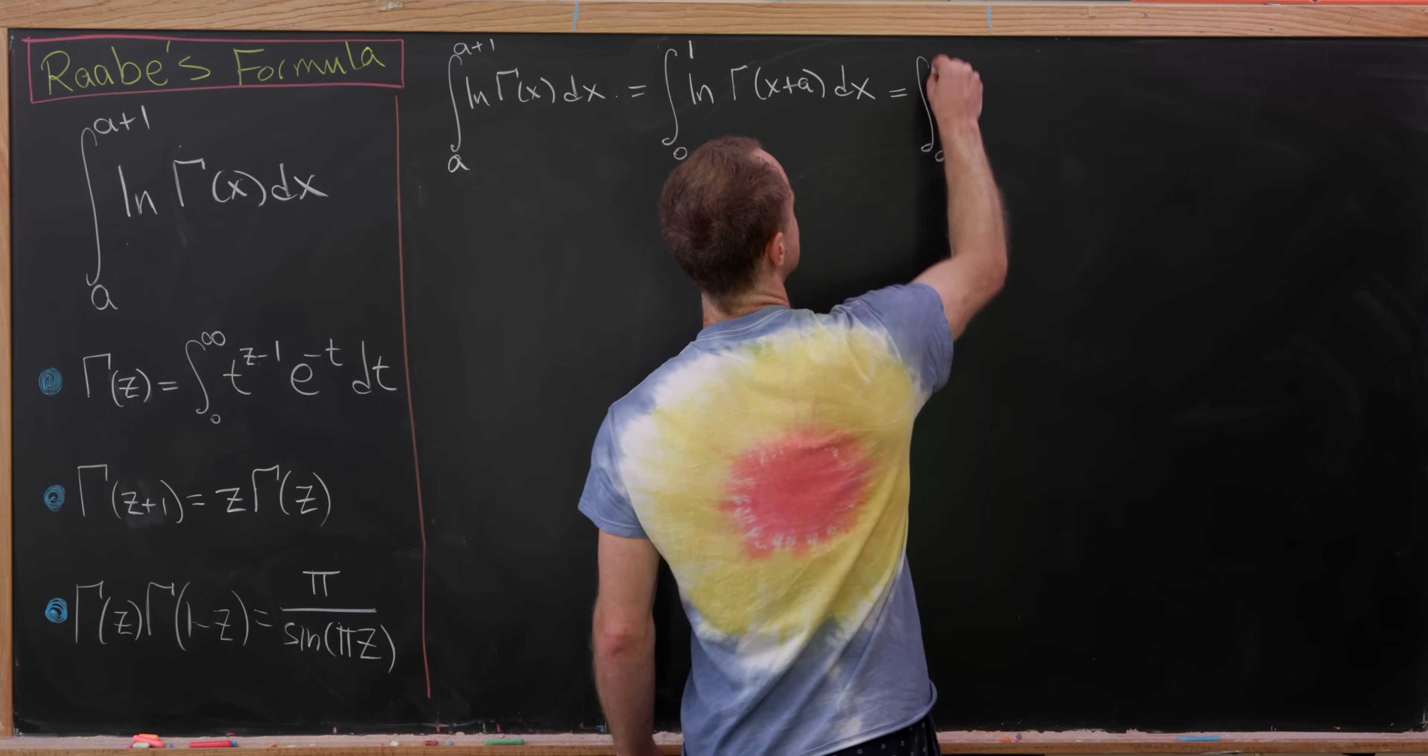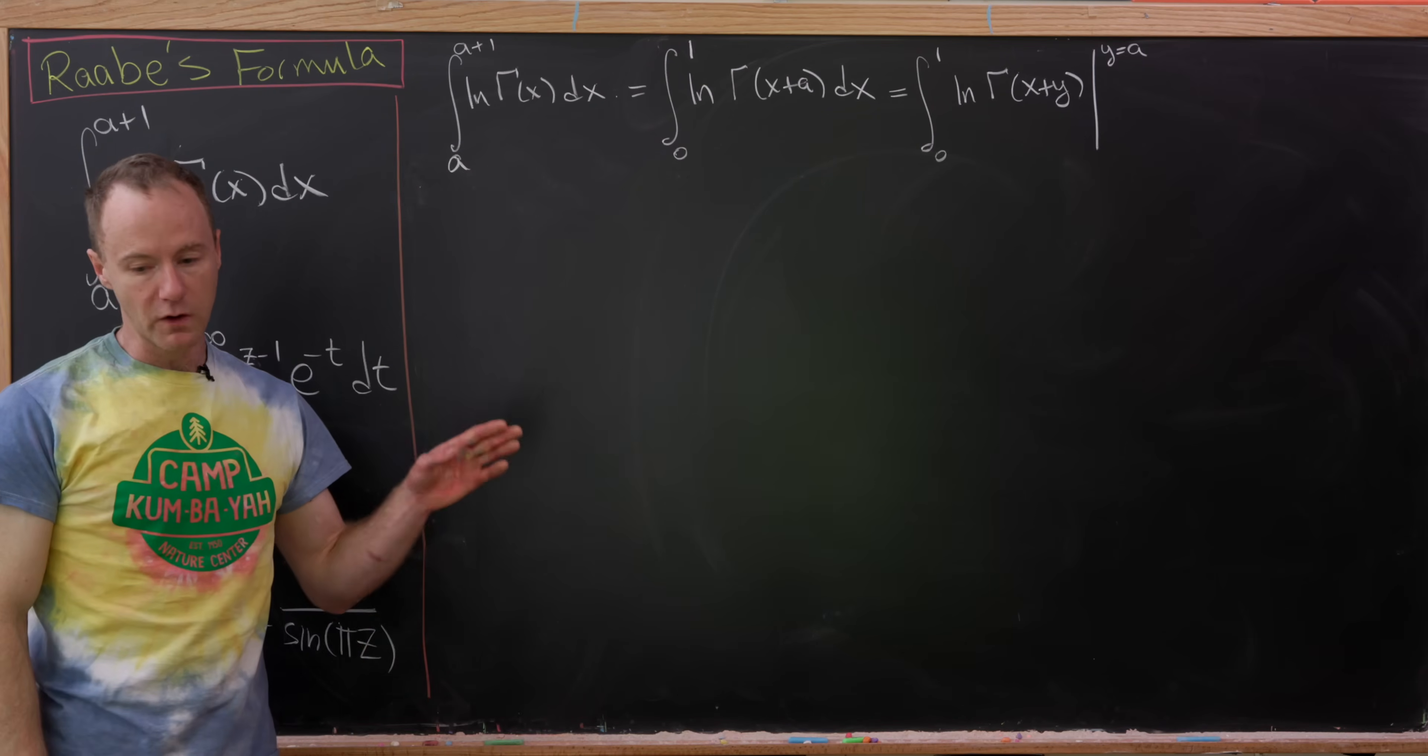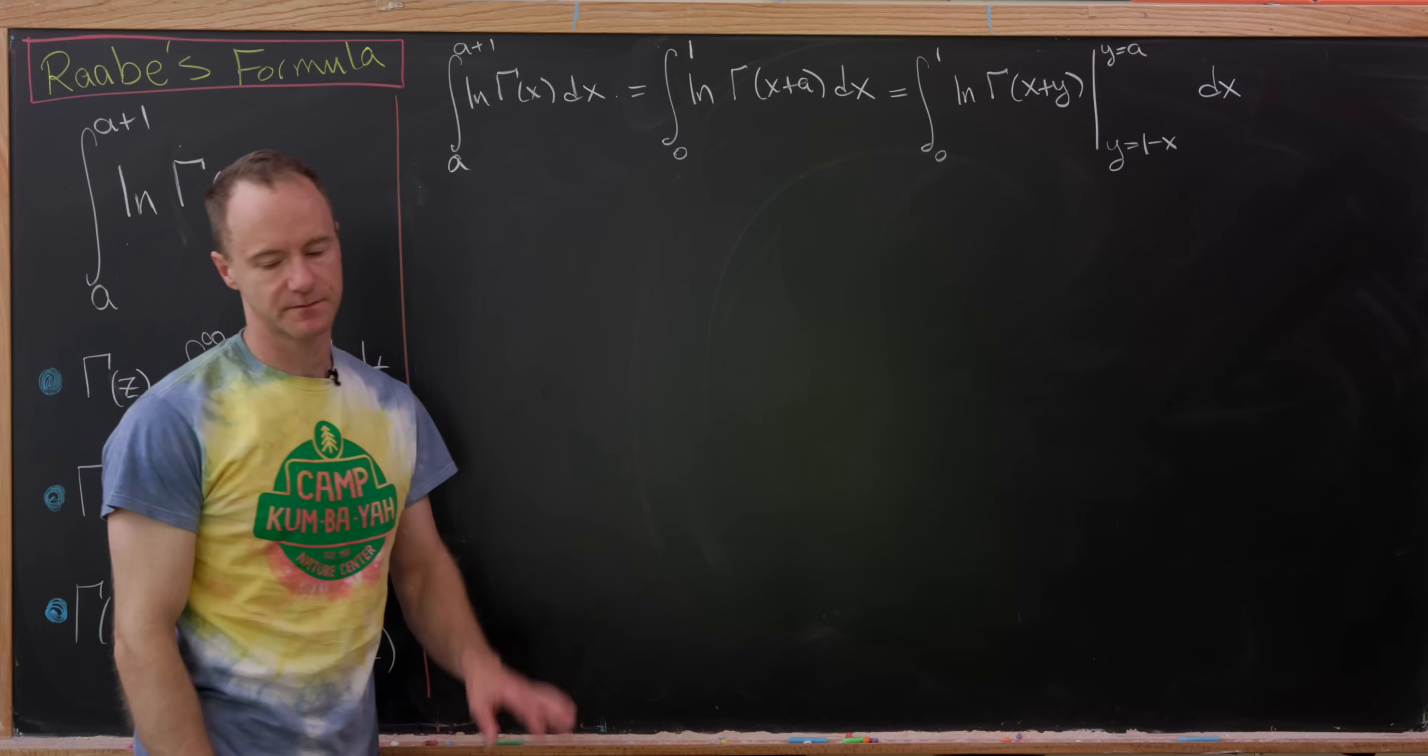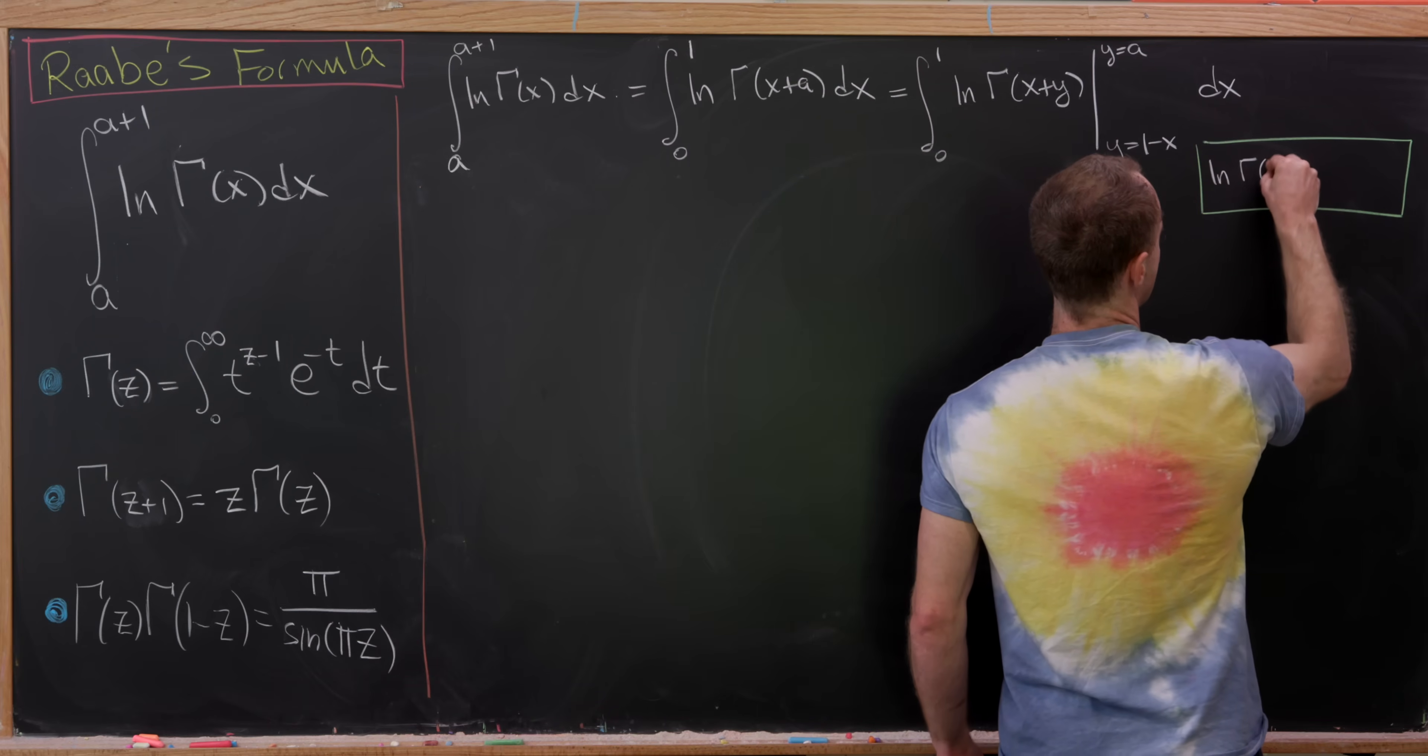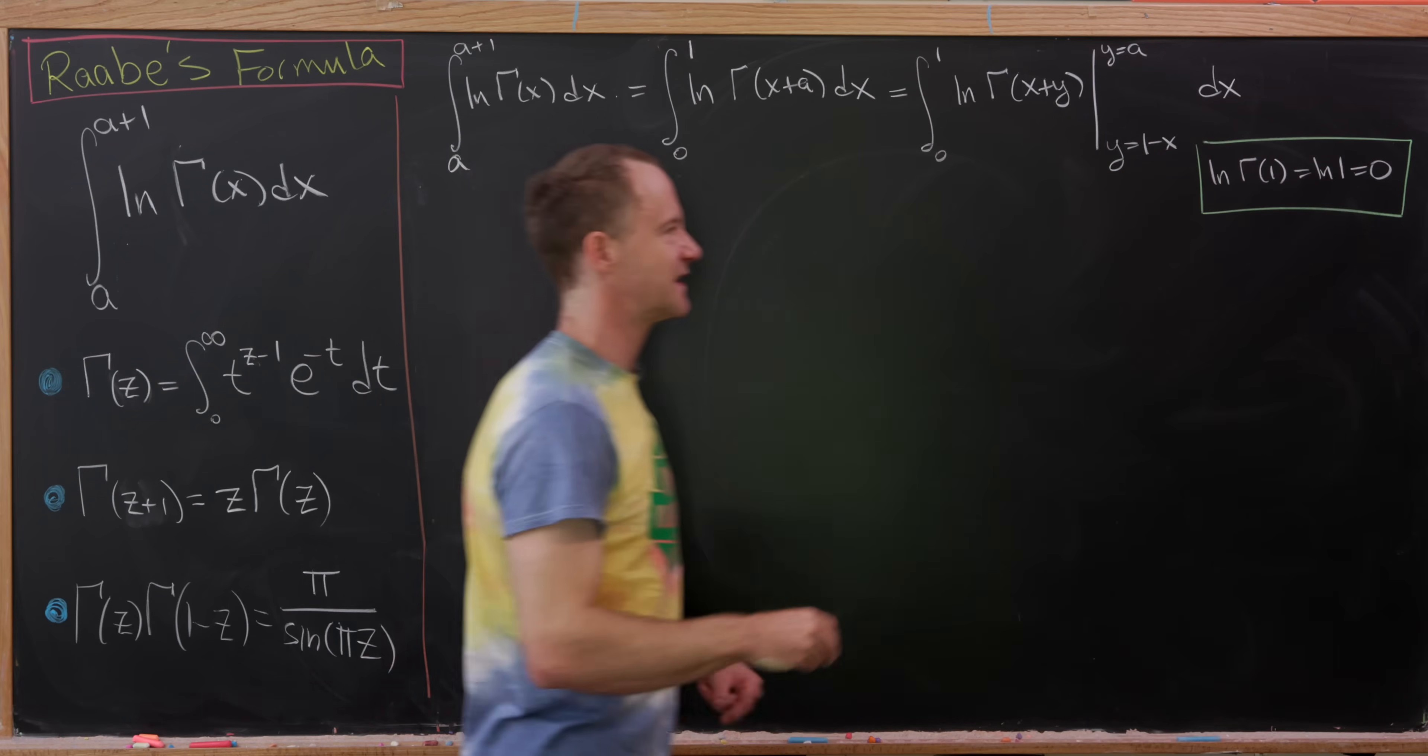So in this case, I'll have the integral from 0 to 1, and then I'll have the natural log of gamma of x plus y evaluated from, well, let's look at the upper bound first. The upper bound will be y equals a, that makes sense because we have x plus a. And then the lower bound we want to put in there will be a bound that will give us 0, and what works here is to set y equal to 1 minus x. So let's talk through this lower bound. If we evaluate this at y equals 1 minus x, we'll get the natural log of the gamma of 1. Gamma of 1 is simply equal to 1, so this ends up being natural log of 1, which is well known to be 0, so that's not contributing anything here.